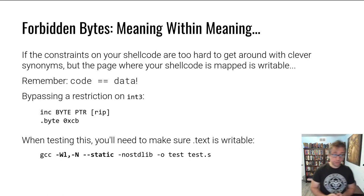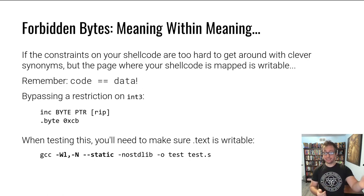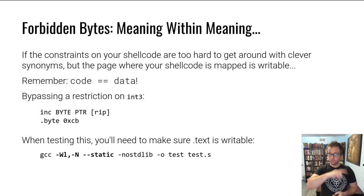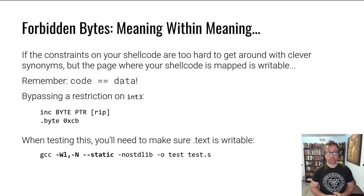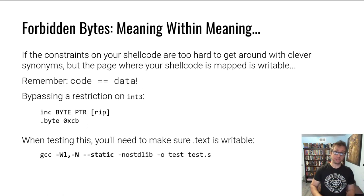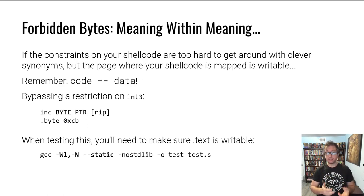What you can do is write a byte 0xCB and increment it. This little snippet increments the instruction pointed to by the instruction pointer — which is going to be the next instruction to execute — increments it, and then it executes as INT3. You have to make sure when testing this that if you're using the shellcode running and testing method discussed earlier in this module, you compile your shellcode with the .text segment being writable. Otherwise, by default, it is not — it's only readable.